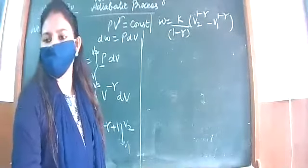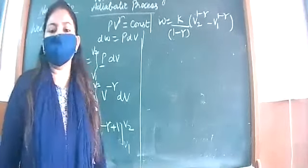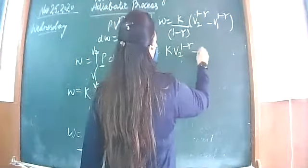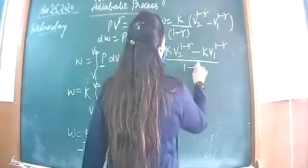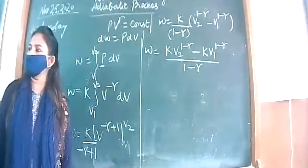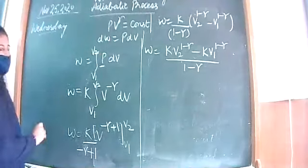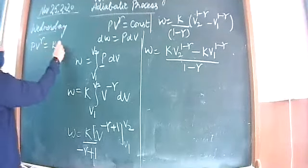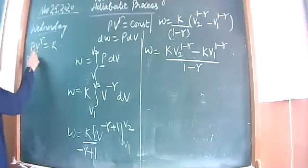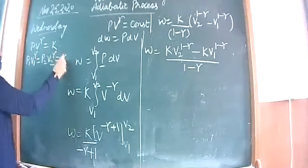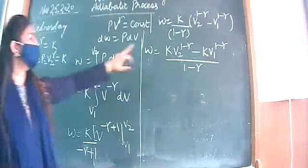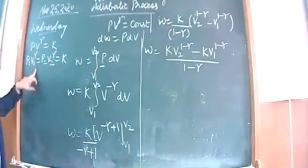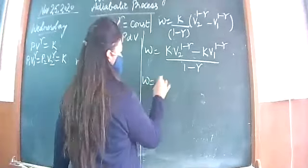We take k inside the bracket: k·V2^(1-gamma) minus k·V1^(1-gamma), all over 1 minus gamma. Now using the adiabatic equation p1·V1^gamma equals p2·V2^gamma equals constant k, where we have V2 we put k equal to p2·V2^gamma, and where we have V1 we put k equal to p1·V1^gamma.